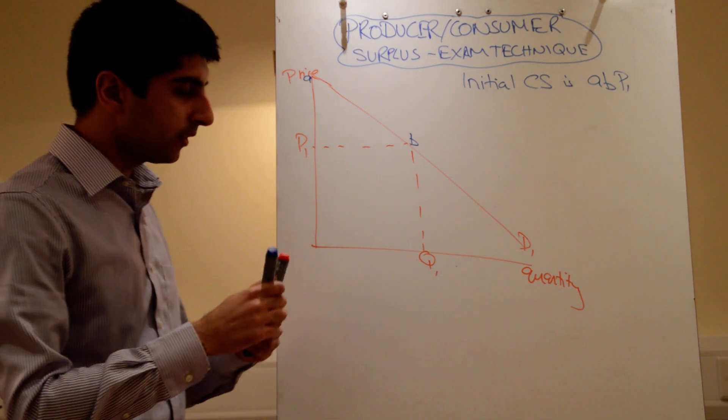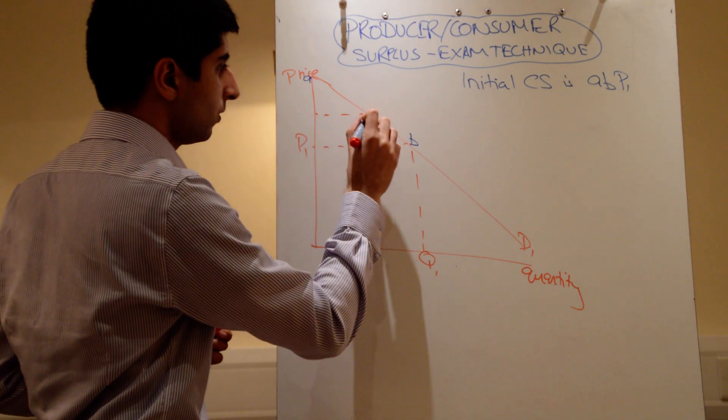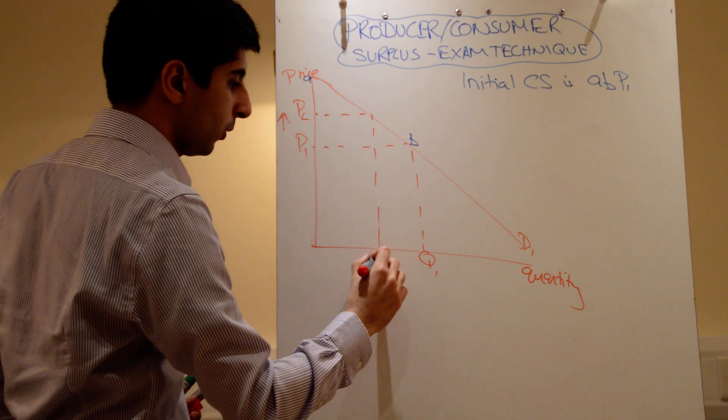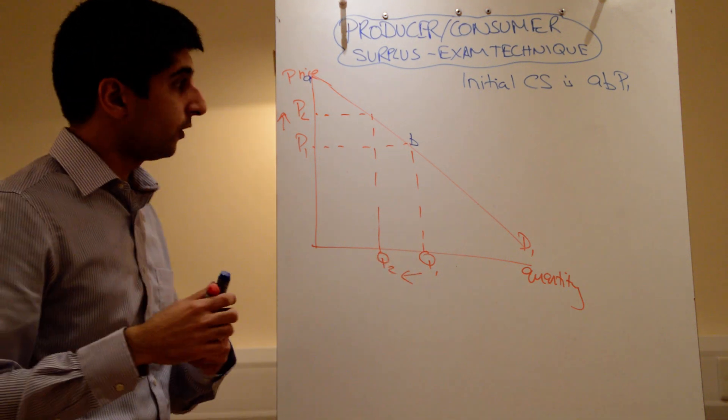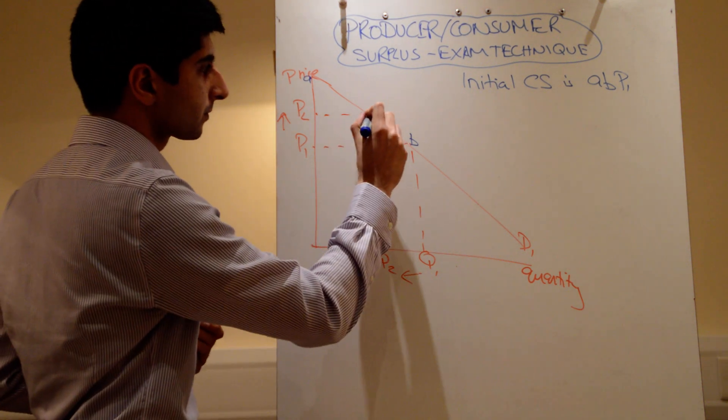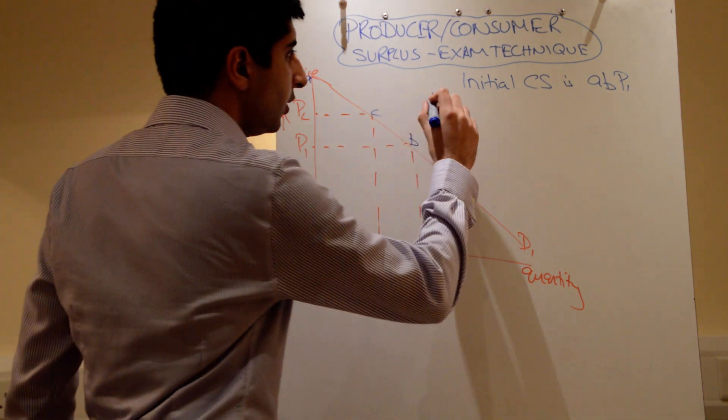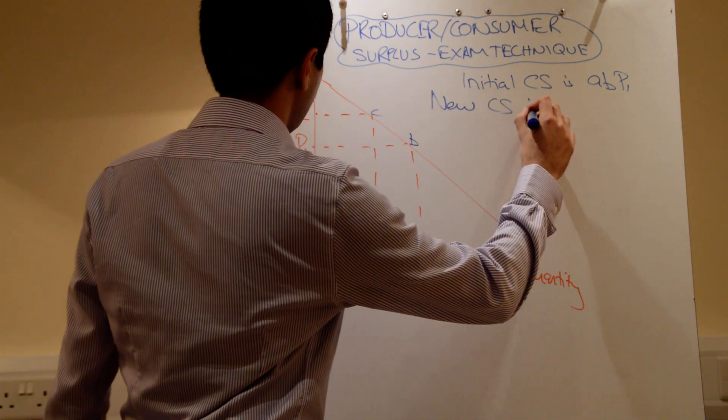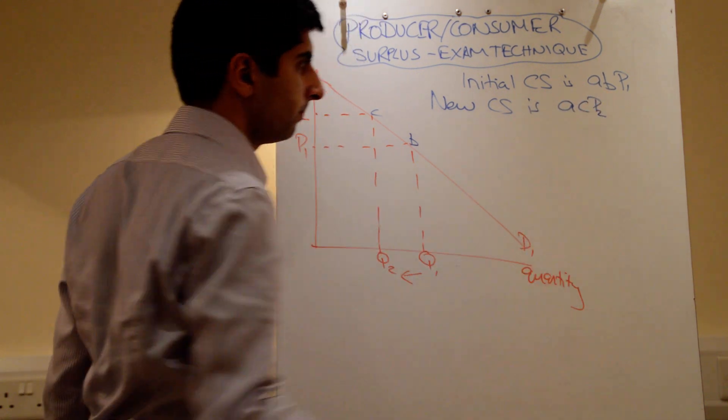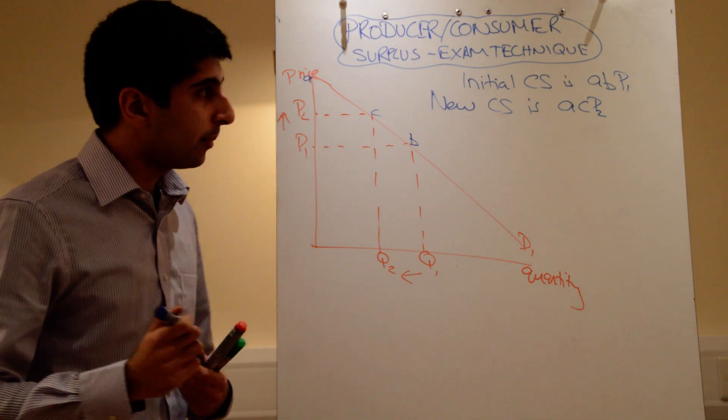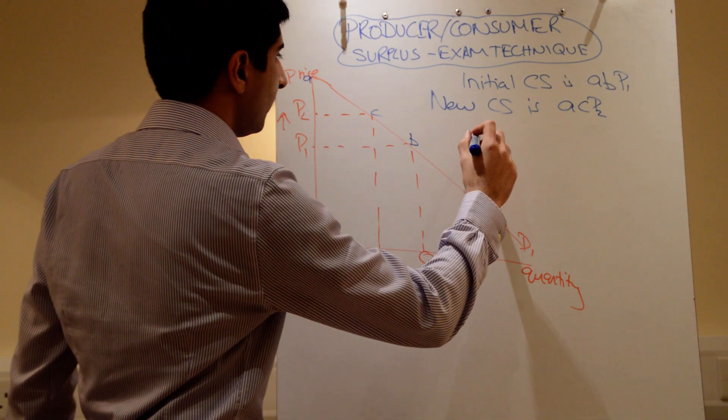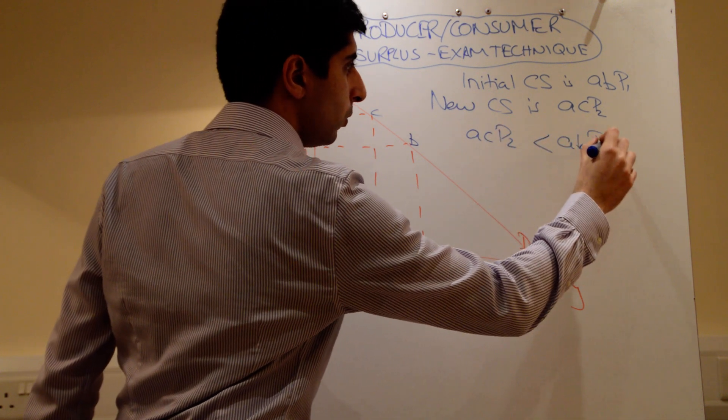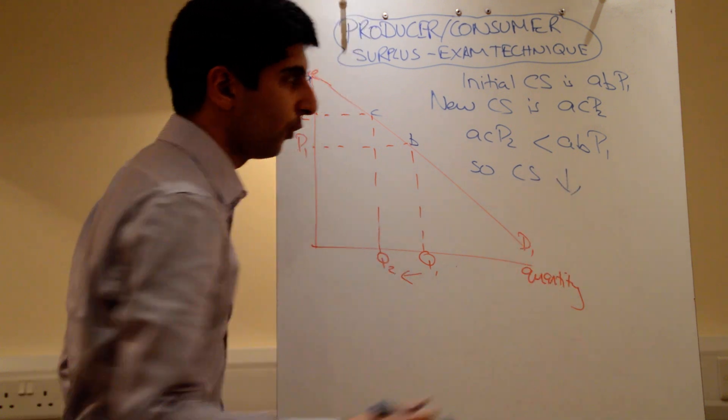And then, as the price rises, so now you would have to show a price rise to P2. The price goes up to P2, quantity falls to Q2. What happens to consumer surplus now? Well, now you say, new consumer surplus, as the price increases, is ACP2. And finally, down below, you have to say that ACP2 is less than ABP1. So, consumer surplus has fallen.